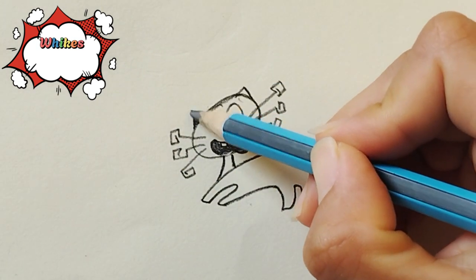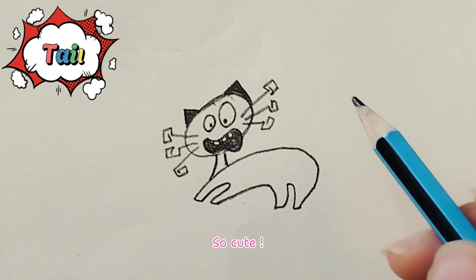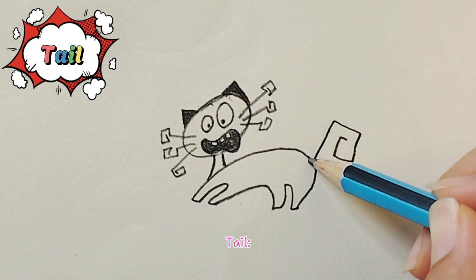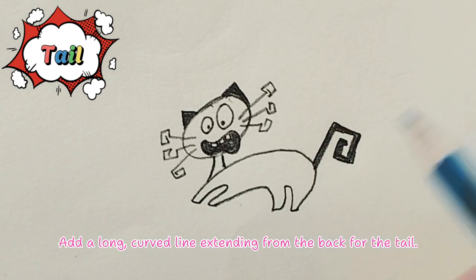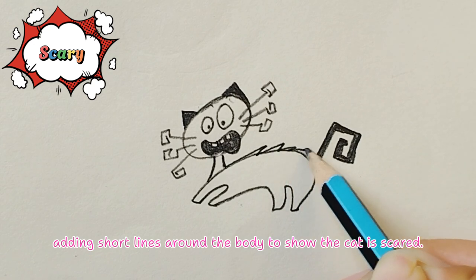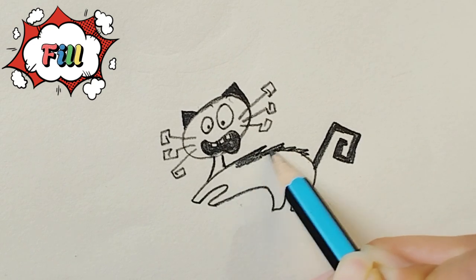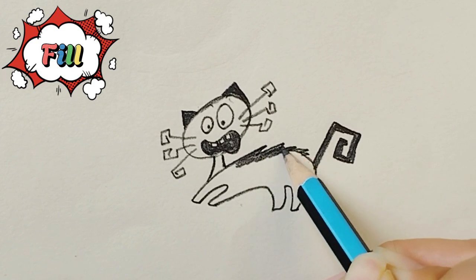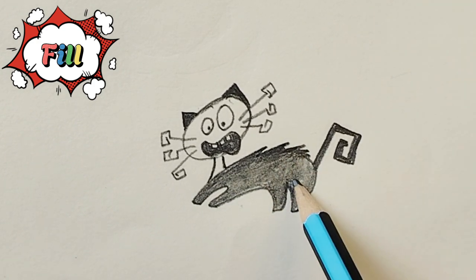Tail: add a long curved line extending from the back for the tail. Final details: add short lines around the body to show the cat is scared. Shade in the body and tail to complete the drawing. We did it!